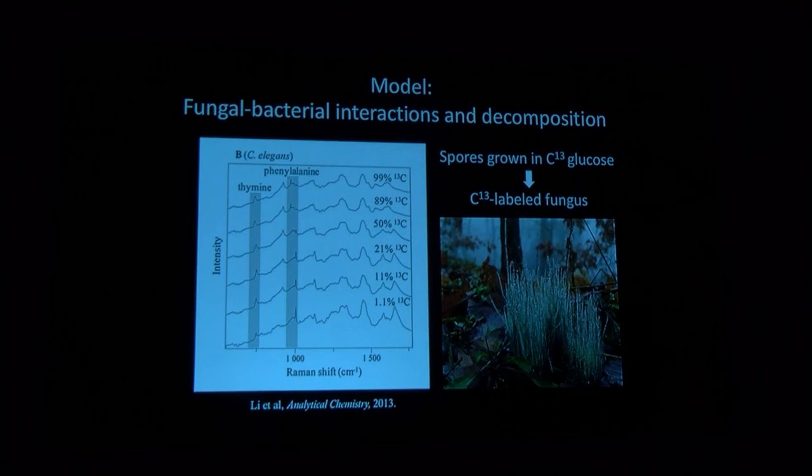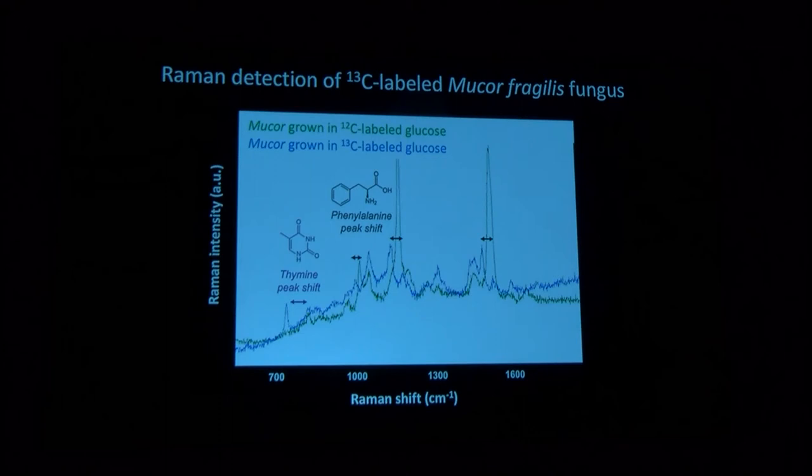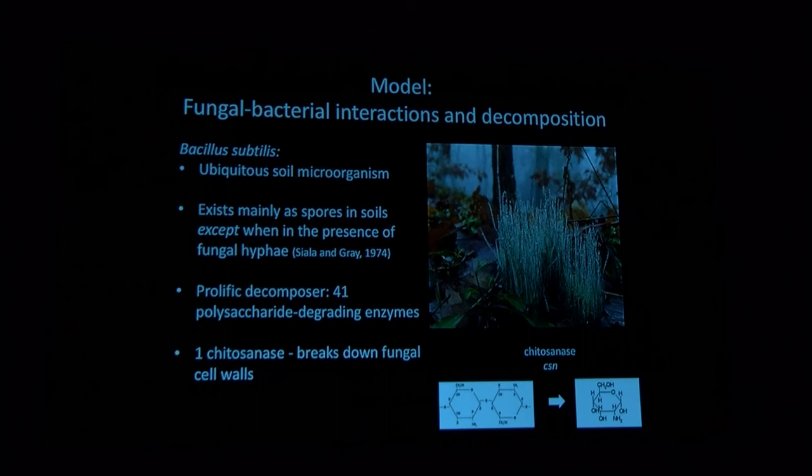So what we should be able to see is that if we grow our spores in C13 glucose, we will end up with a labeled fungus. And what we should see under the Raman microscope is this shift. Because it's a eukaryotic organism, we should see a shift both in the phenylalanine and the thymine peaks. So we did do this experiment, and indeed that is what we saw. We can grow these mucor organisms in our microcosms, and we see that if we grow them in 12C labeled glucose, then the phenylalanine is over here. But if we grow them in C13 labeled glucose, then we see these very nice peak shifts indicating that we have really nicely labeled and evenly labeled fungi.